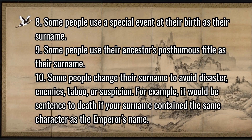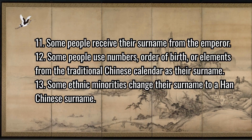Some people use their ancestor's posthumous title as their surname. Some change their surname to avoid disaster, enemies, taboo, or suspicion — for example, it would be sentenced to death if your surname contained the same character as the emperor's name. Some people receive their surname from the emperor. Some use numbers, order of birth, or elements from the traditional Chinese calendar as their surname.